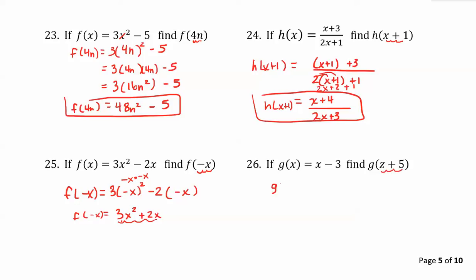So g of z plus 5, instead of x minus 3, we get what minus 3? Well we get z plus 5 minus 3. We don't have any number to distribute into the parentheses, so we can just say that that is z plus 5 minus 3, and that simplifies to z plus 2. So g of z plus 5 is equal to z plus 2.